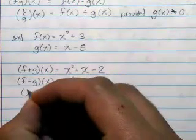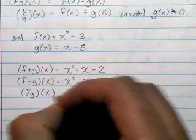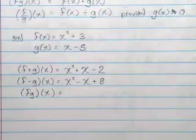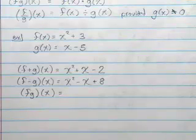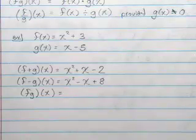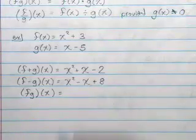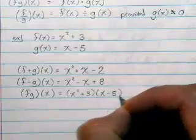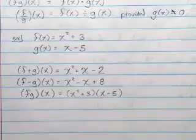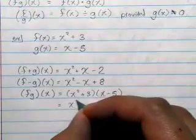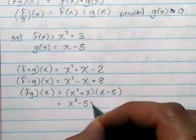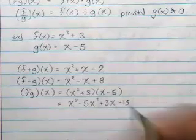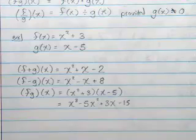Okay, how about fg of x? For the multiplication, I'm not going to be a hard nose about requiring you to FOIL it all out. The back of the book will do that — they'll actually multiply it all together. So if you wanted to just leave it as x squared plus 3 multiplied by x minus 5, that's okay. Though technically, if it were all multiplied together, you'd have x to the third minus 5x squared plus 3x minus 15. I'll take either.